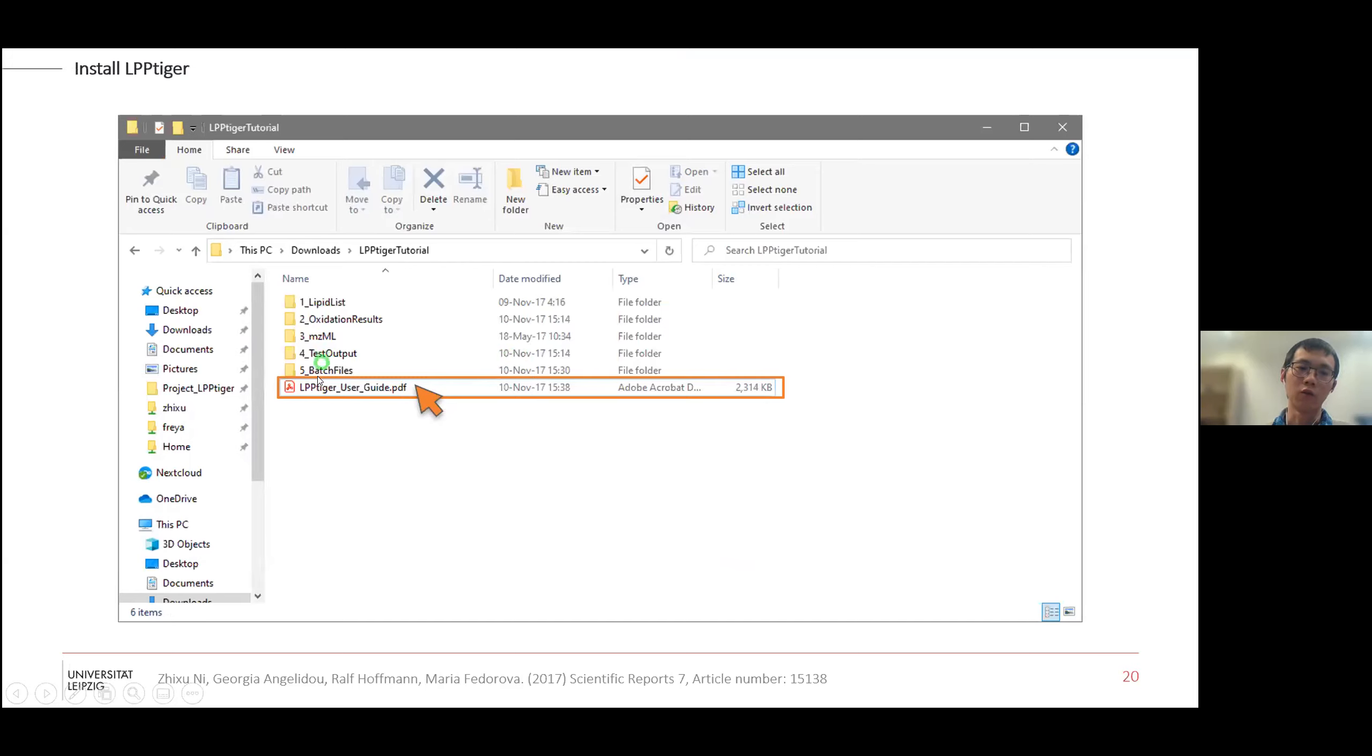If you download the tutorial package and the user guide, you get a list of folders. This includes step-by-step user guide with screenshots and examples. In each folder we have the sample files and sample output from each step. Today I will give you just a short overview of how it will work, and then you can download this tutorial pack and try it yourself.